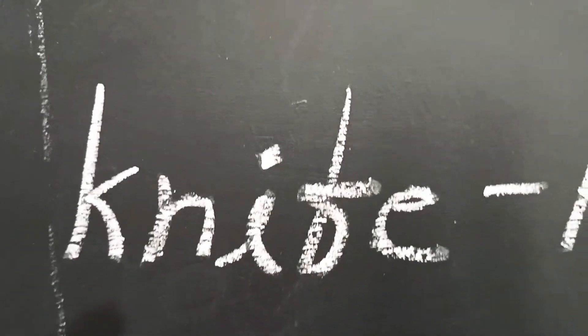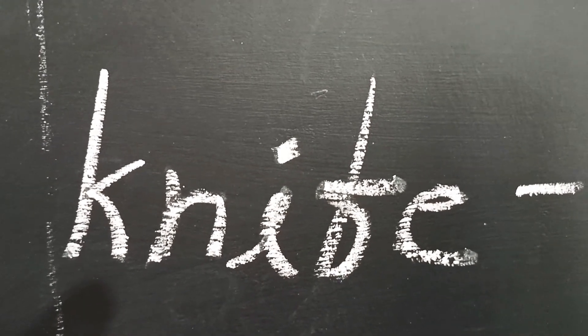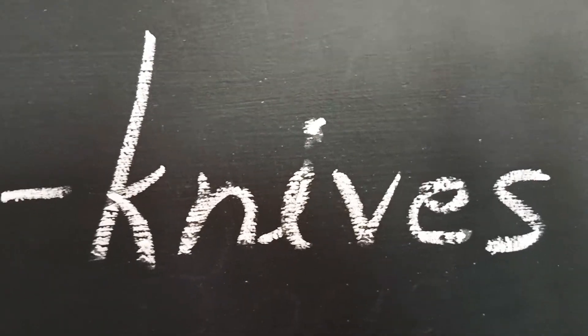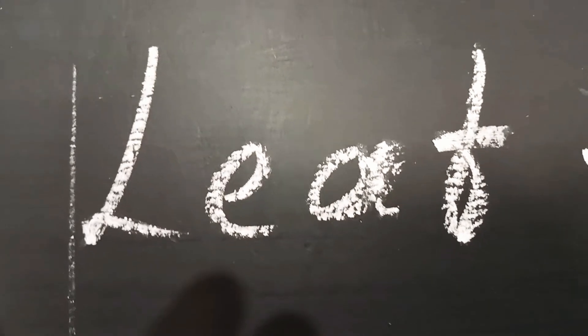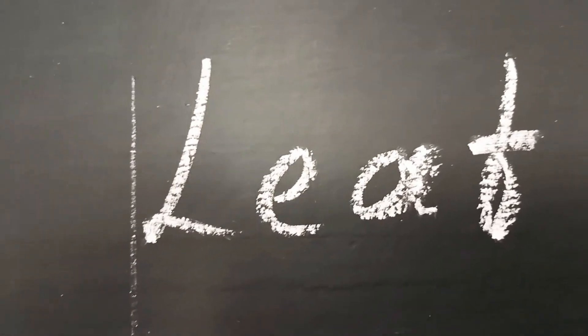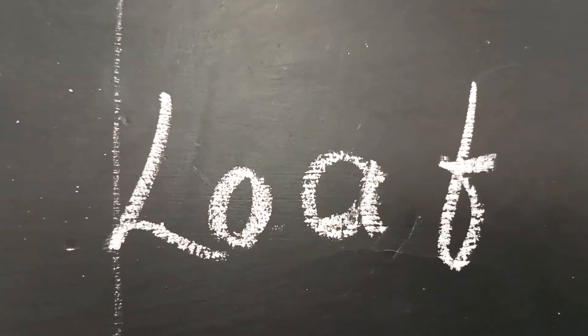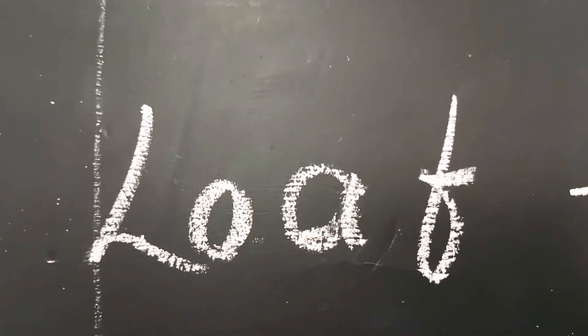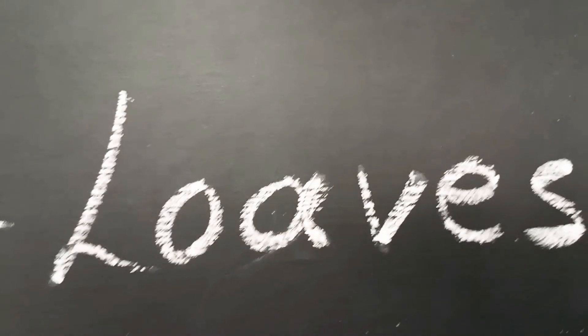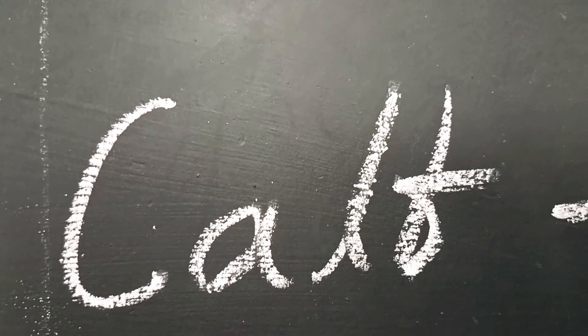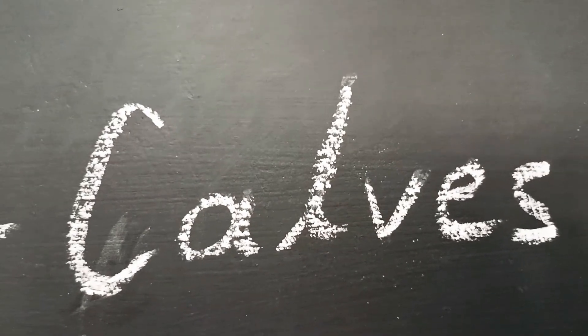If the last alphabet is FE, remove FE and suffix VES. If the last alphabet is F, remove F and suffix VES. If the last alphabet is F, remove F, then suffix VES. If the last alphabet is F, remove F and suffix VES.